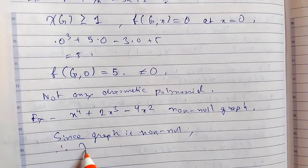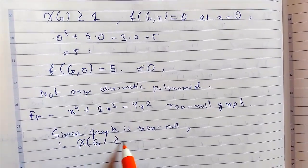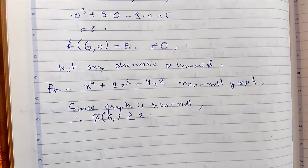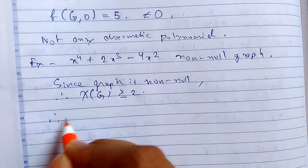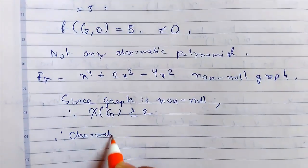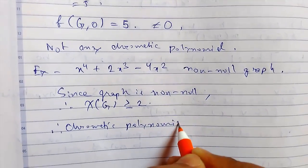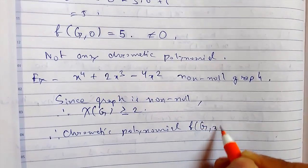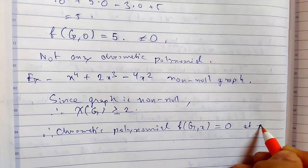Therefore we have chi of g must be greater than or equal to 2. I have explained this in my previous properties. So therefore chromatic polynomial f of g comma x equals to 0 at x equals to 1.